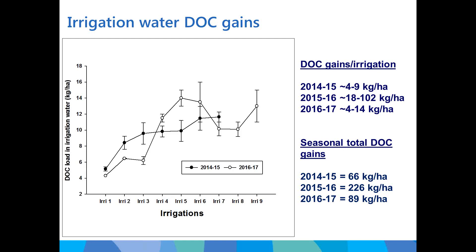Carbon gains from irrigation water ranged from 4 to 102 kg per hectare per irrigation event, and seasonal dissolved organic carbon gains ranged from 66 to 226 kg per hectare. A mid-season spike in DOC loads from irrigation water in the 2016-17 season was reflected in the runoff load data presented earlier.